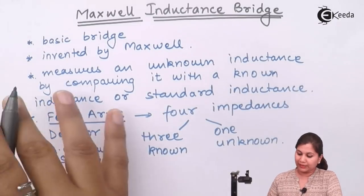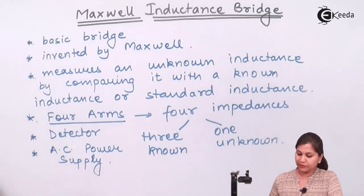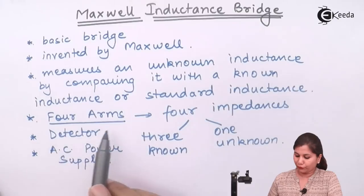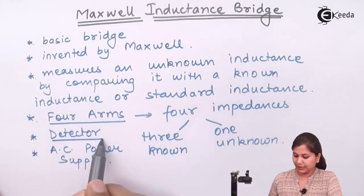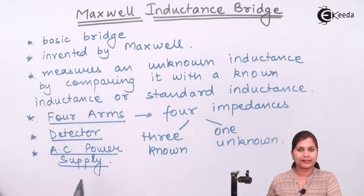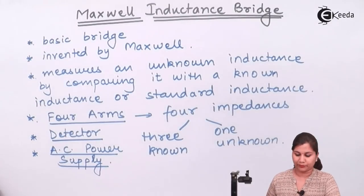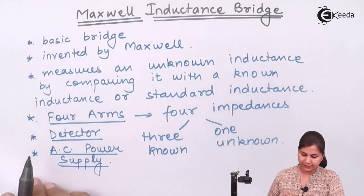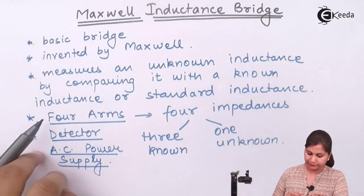So this Maxwell inductance bridge is also going to consist of four arms, a detector, and the AC power supply. Let us first see its circuit diagram.